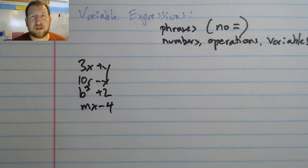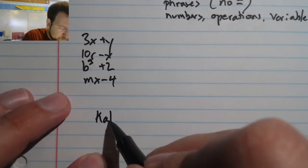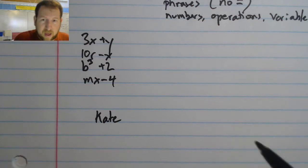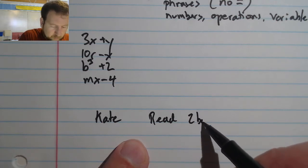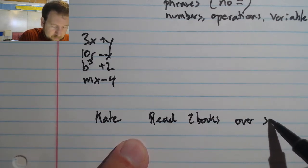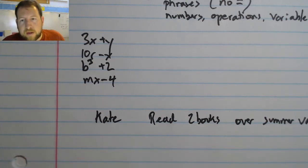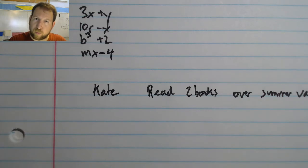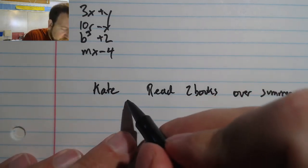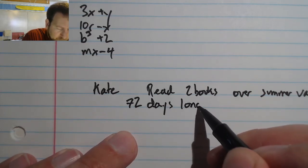Now let's take a look at an example of what a variable expression could be. We're going to take a look at Kate and her book. Kate has summer reading and she needs to read two books over summer vacation. She doesn't want to read the books at the last minute and she wants to spread it out over the whole vacation, and her vacation is 72 days long.